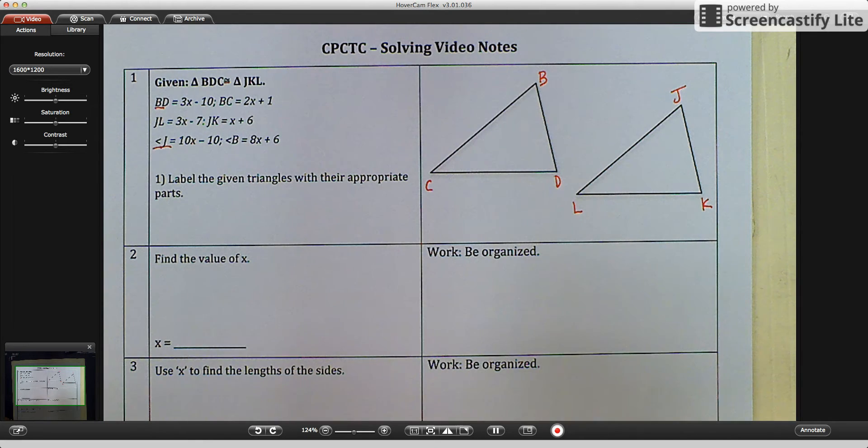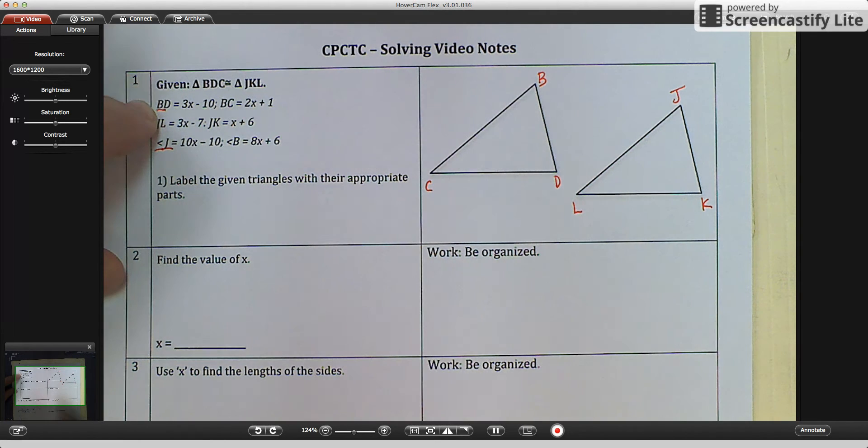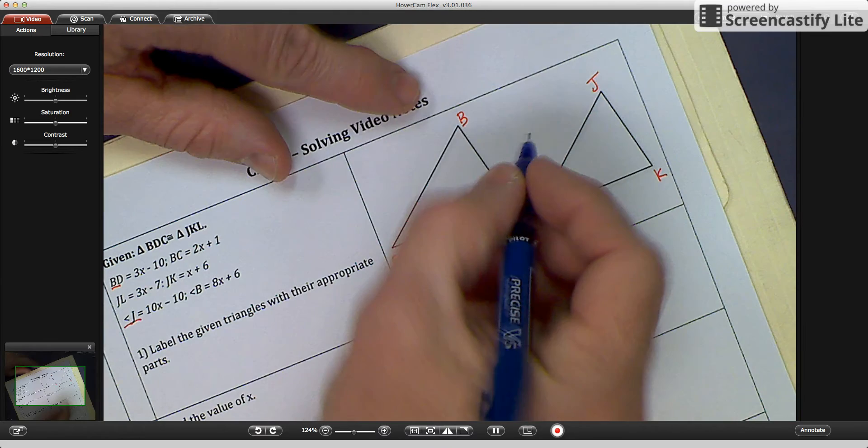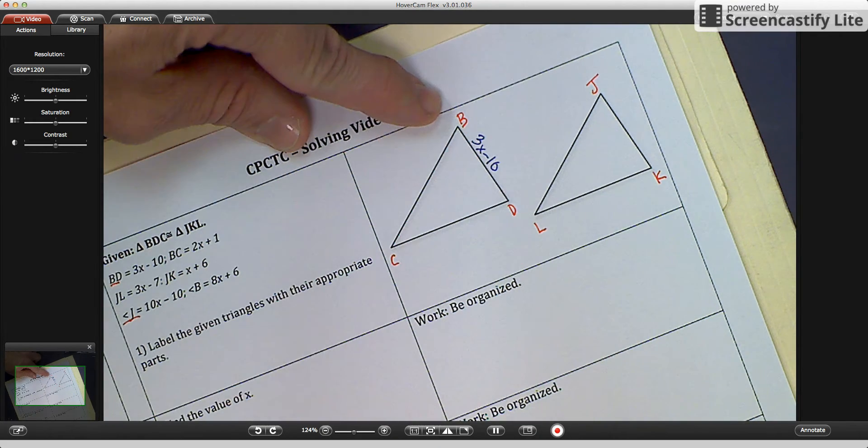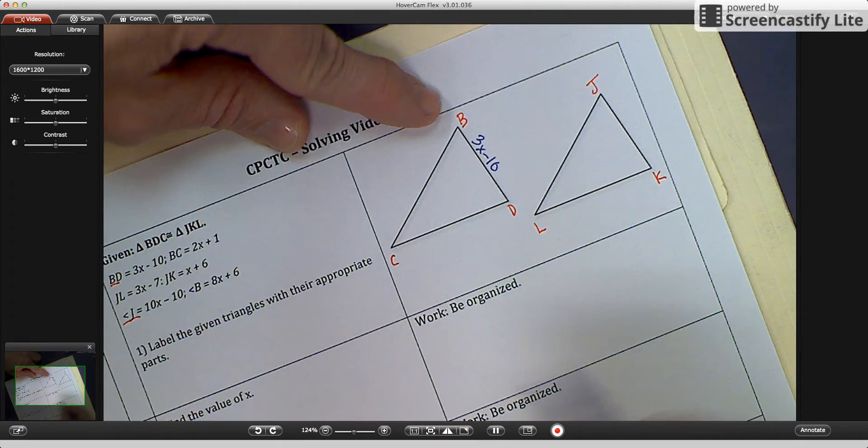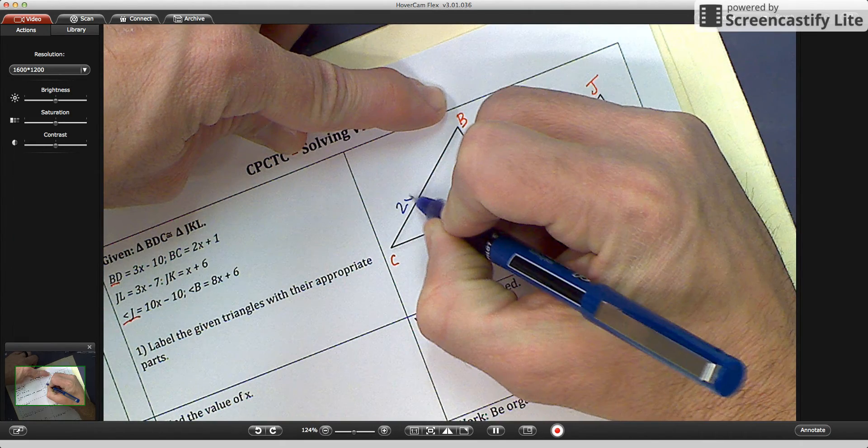Now we're going to label them because it says BD is 3X minus 10. So I'm going to come over here and write 3X minus 10 because that's going to make it easier for me in a moment. It also says BC is 2X plus 1.